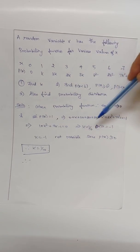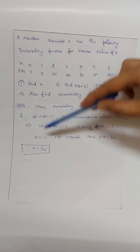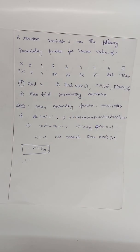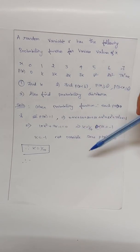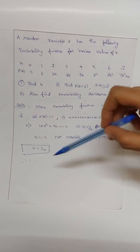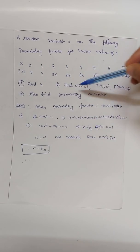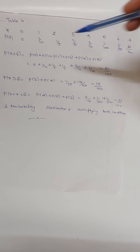One root is positive and one is negative. Since condition one requires each probability value to be greater than or equal to zero, k = −1 is not possible. So the only valid option is k = 1/10.